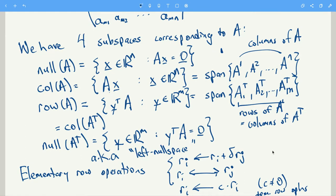Well, it means you take a matrix, and you do one of these three things. Replace the i-th row with the i-th row plus delta times the j-th row. You can switch the i-th and the j-th row, or you can multiply the i-th row by a non-zero constant C. So doing one of those three things is an elementary row operation.